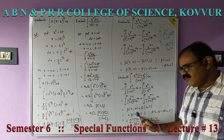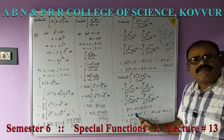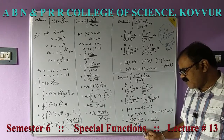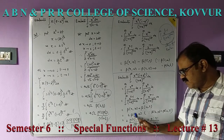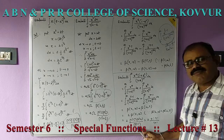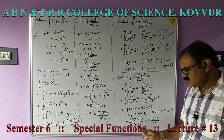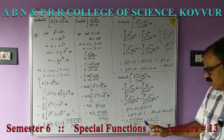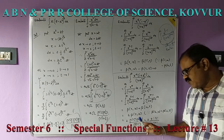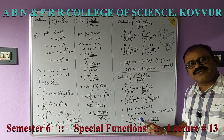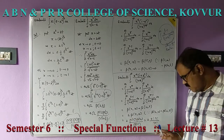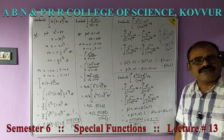2 times beta(m,n) = 2 × Γ(m)·Γ(n) / Γ(m+n). Therefore this is 2 × Γ(5)·Γ(10) / Γ(15) = 2 × 4! × 9! / 14!. Simplify this.